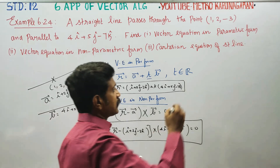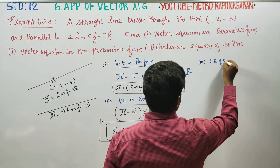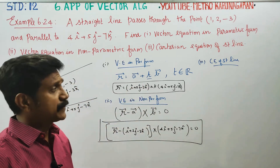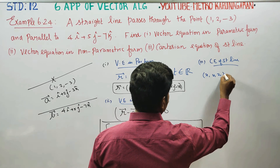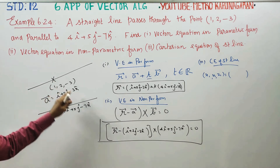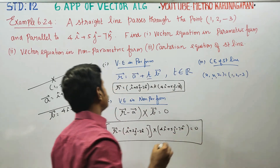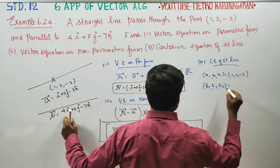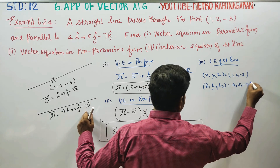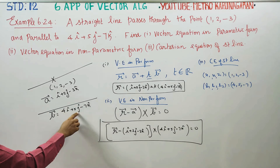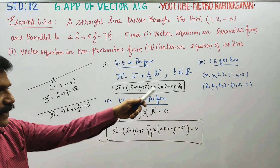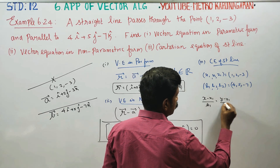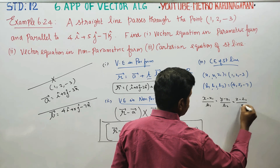Third is the Cartesian equation of the straight line. In the Cartesian equation, we use the components from the i, j, k vectors. The direction ratios are 4, 5, and -7 from the b vector. The Cartesian equation formula is: (x - x₁)/b₁ = (y - y₁)/b₂ = (z - z₁)/b₃.